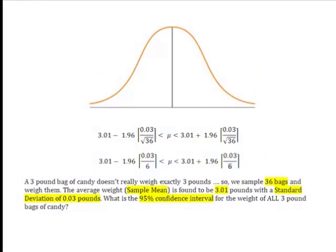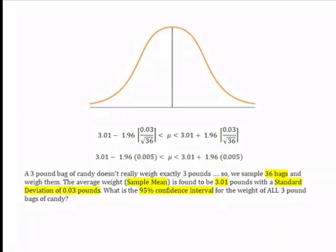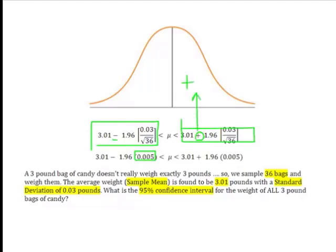Let me do the math. Remembering order of operations, the first thing I do is the square root of 36, which is 6. Next, I divide 0.03 by 6 on each side and come up with 0.005. This formula is the same on the lower and upper end except: on the right side of the curve we add, on the lower side we subtract. Now I take 1.96 multiplied by 0.005 on each side of the curve.